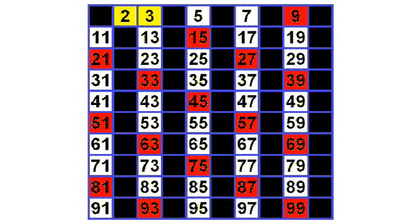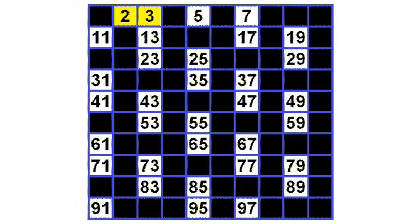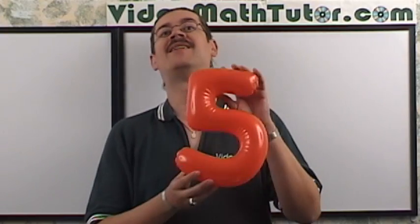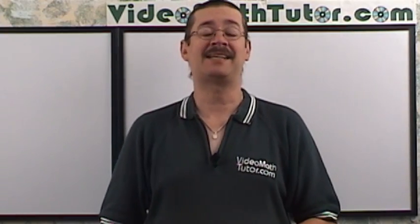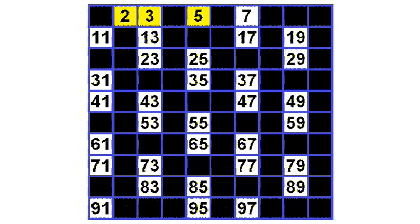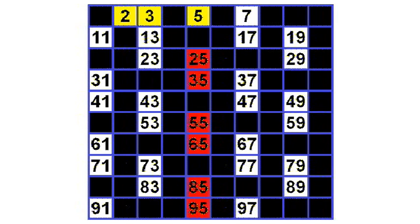Now let's black out all these multiples of 3. Our next prime number is 5. So let's go ahead and highlight that right now. Now let's find all the multiples of 5. Well, they're all right here. And let's go ahead and black them out.